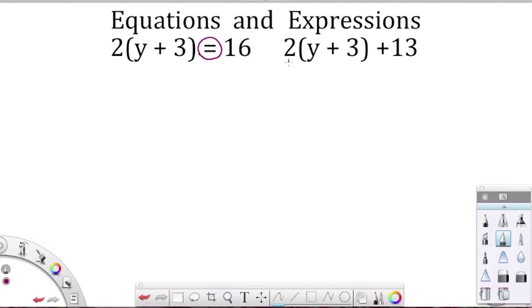Let's simplify this first by distributing. We can go 2 times y will give us 2y. We continue to distribute. 2 times the 3 will give us 6. We bring down our addition sign, and then we also bring down the rest of the mathematical information, which is plus 13. We distribute it. Is there anything else we can do in the simplification process? Yes, combine like terms.